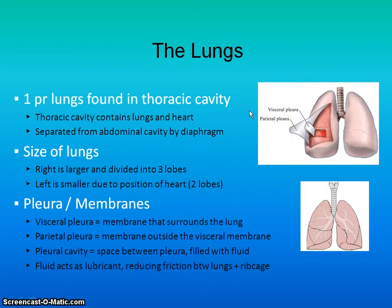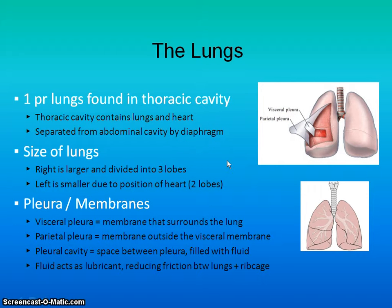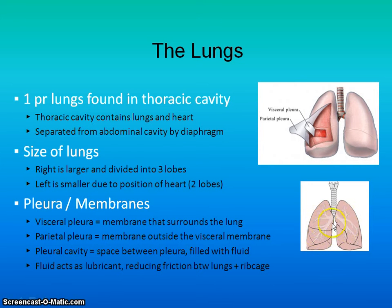If we look a little closer at the lungs, we have one pair of lungs found in the thoracic cavity. The right lung is a little larger than your left one because of where the heart is positioned. It has three lobes, whereas the left one has two.